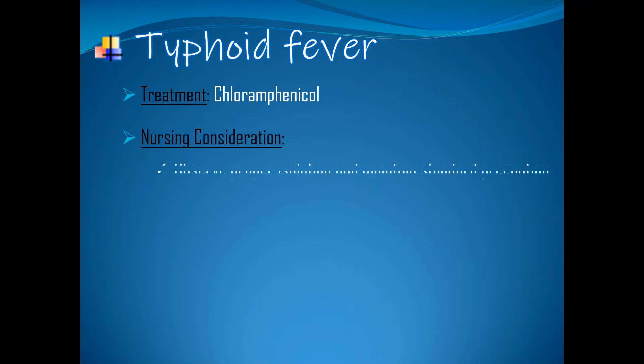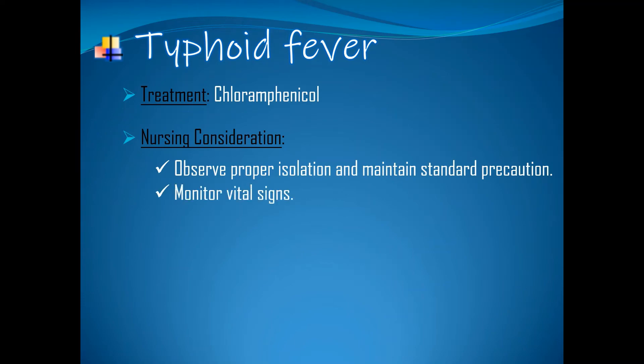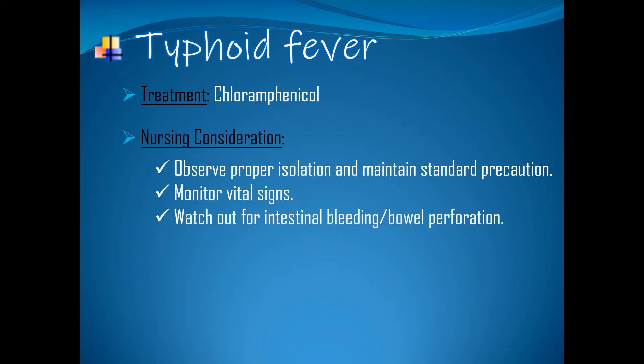Nursing considerations: observe proper isolation and maintain standard precaution. Monitor vital signs. Watch out for intestinal bleeding or bowel perforation, like abdominal tenderness and sudden pain in the right lower side of the abdomen. Finally, health education on proper sanitation, preparation of food and water, and disposal of excreta.